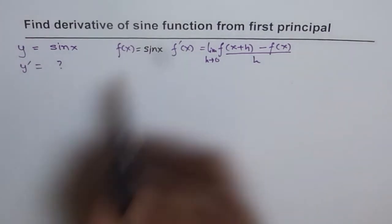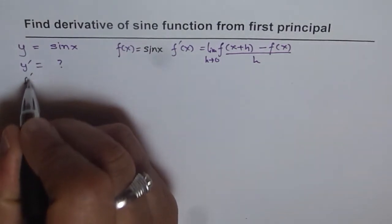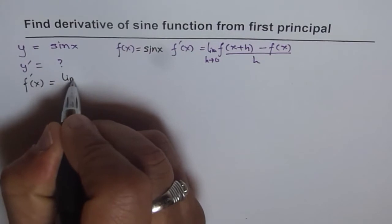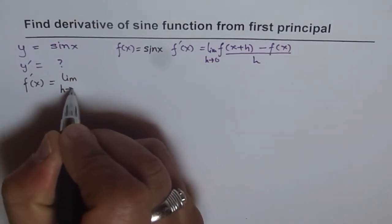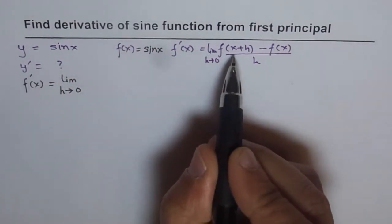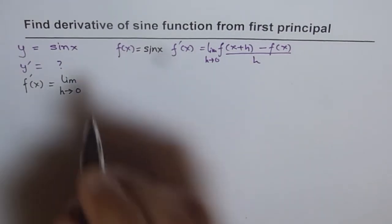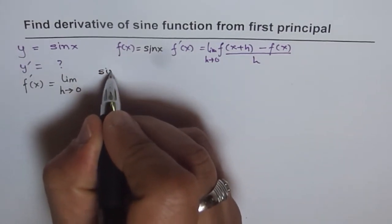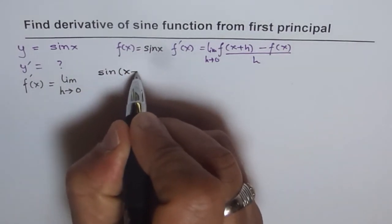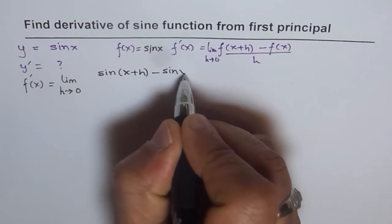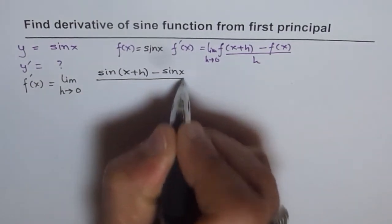So which we can write here as: f dash of x will be equal to limit h approaches 0, and when we say x plus h, then x will be replaced by x plus h. So we get sine of x plus h minus sine x over h.